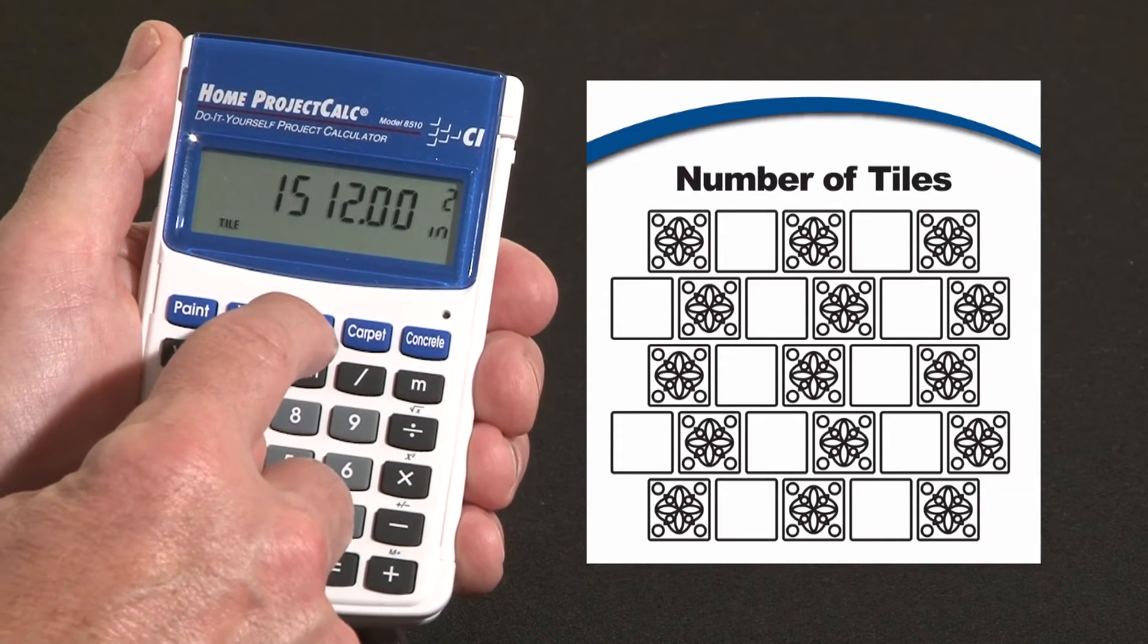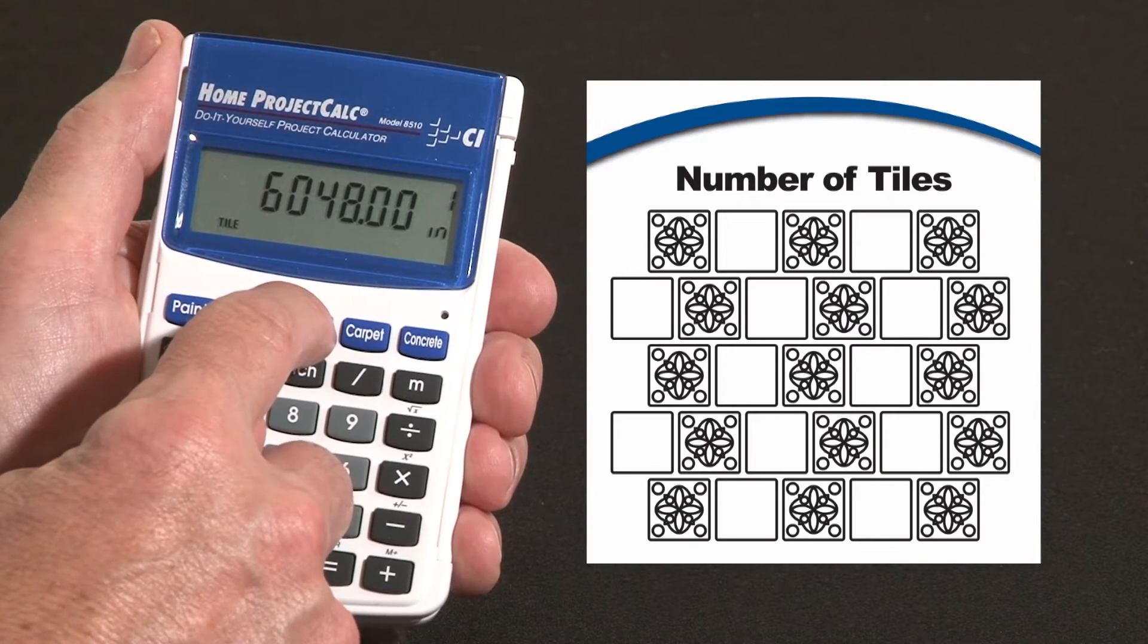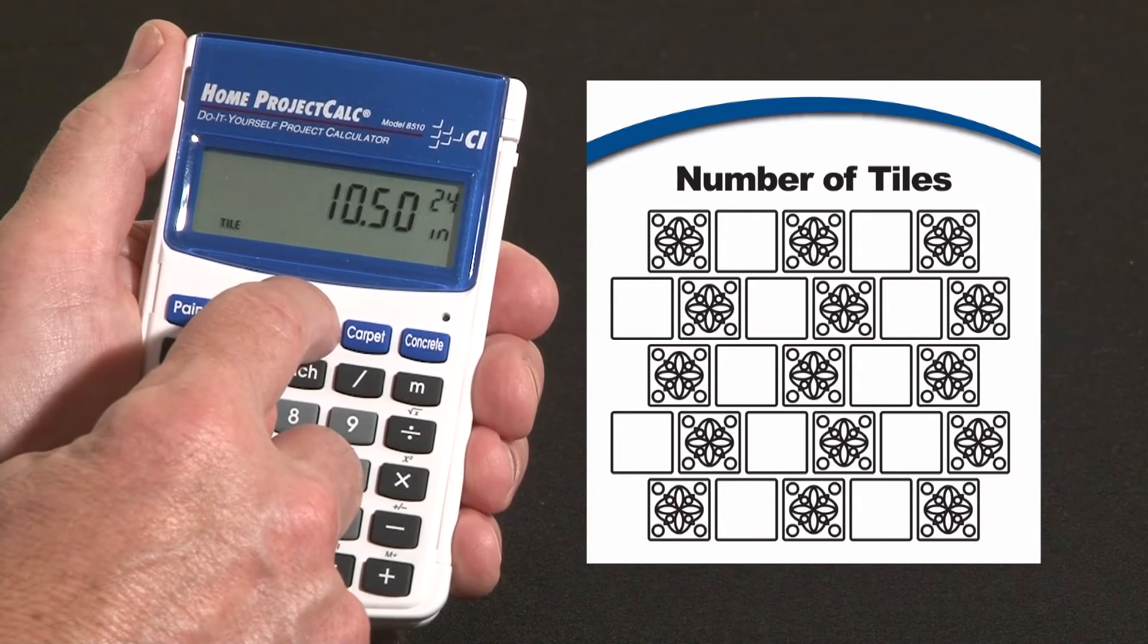Now I just hit the tile key. First press tells me for 2 inch tiles we need 1512. 1 inch tiles is about 6,000 tiles. 24 inch tiles, 10, call it 11 tiles.